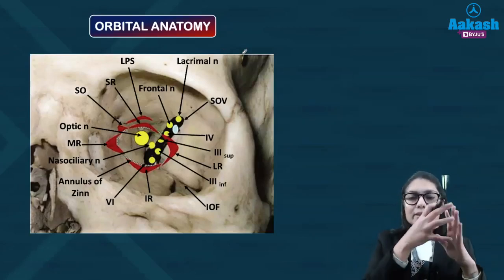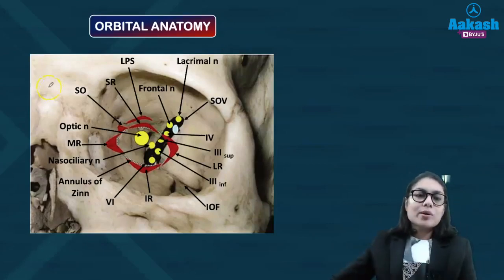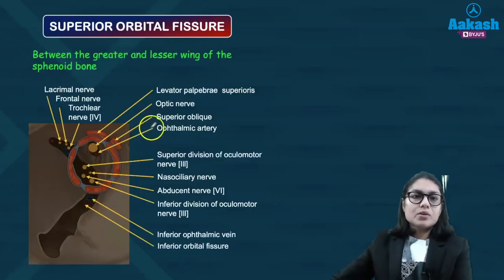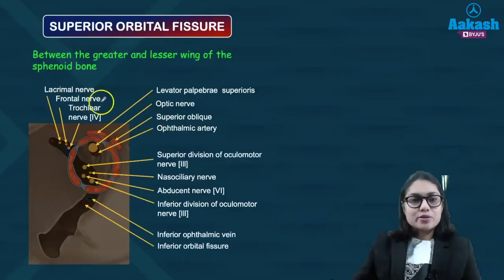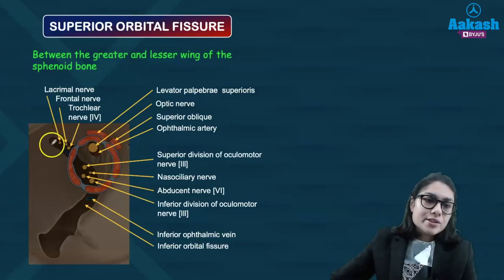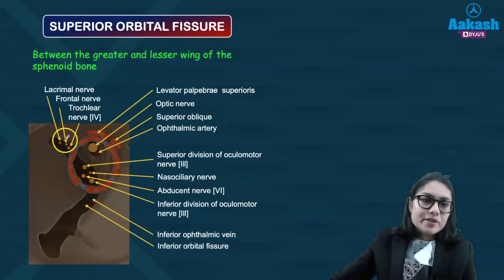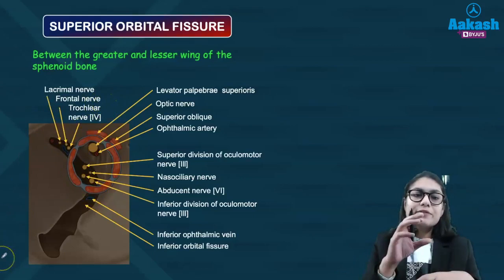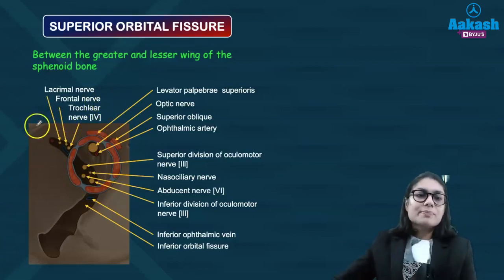All four walls are going to converge onto the orbital apex. The orbital apex basically shows two important openings — one will be your superior orbital fissure and another will be your optic foramen or optic canal. The superior orbital fissure is a sickle-shaped fissure formed by the greater and the lesser wing of sphenoid, and this fissure is then divided into various portions by the annulus of Zinn.